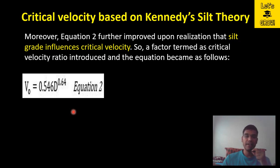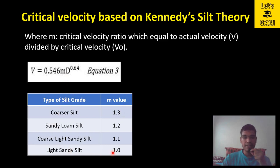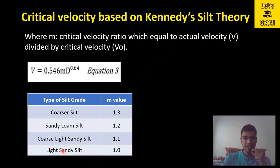A new term m — the critical velocity ratio — was introduced to account for silt grade, where m equals the actual velocity V divided by the critical velocity V₀. The value of m can be taken from a table: for coarser silt m = 1.3, for sandy loam silt m = 1.2, for coarse light sandy silt m = 1.1, and for light sandy silt m = 1.0, meaning actual velocity equals critical velocity for the standard silt.